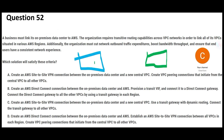Now let's jump to question 2. You have two boxes — a blue on-premises box and a green AWS box. The organization requires transitive routing capabilities, meaning a Transit Gateway will be used. The requirements are: cut outbound traffic expenditures, push bandwidth, and achieve a consistent network experience. Anything going out of the cloud is chargeable; anything coming in is free. When you think high bandwidth and consistent network experience, think AWS Direct Connect. This eliminates options A and C, which use Site-to-Site VPN instead of Direct Connect.